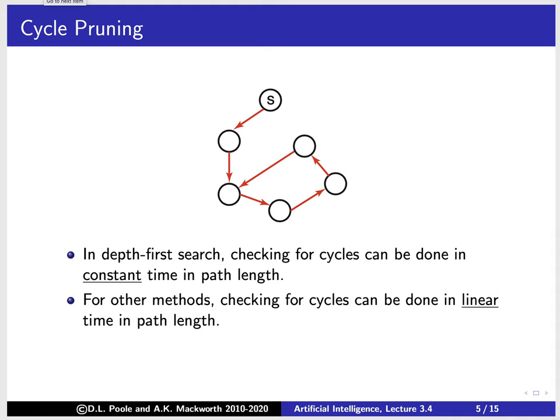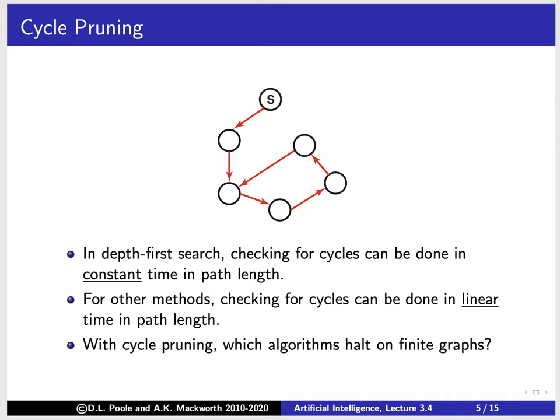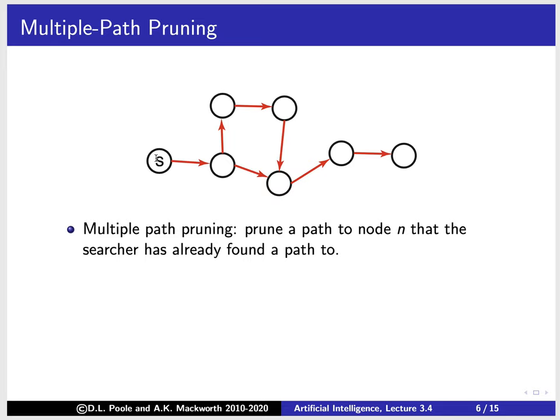With cycle pruning, which algorithms halt on finite graphs? Think about that and we'll discuss it in class. Another thing we might want to do is what's called multiple path pruning. Suppose we found a path to a set of nodes, and then in our search we find another path to a node we've already reached. There's no point exploring this longer path to a node if we've already found a shorter path to it. So with multiple path pruning, we prune any path to a node that the searcher has already found a path to.